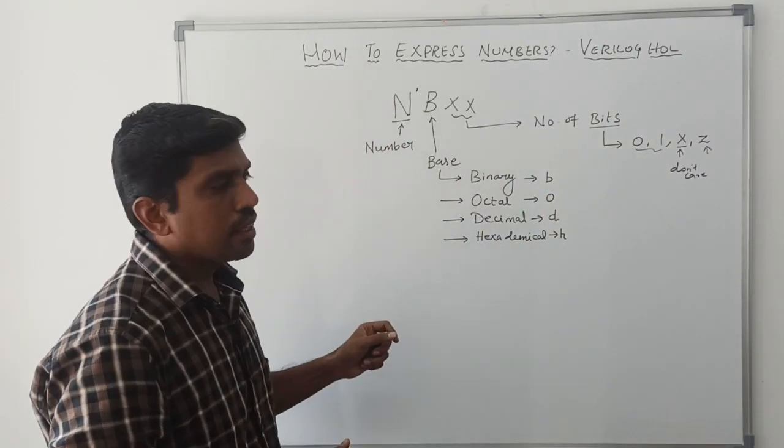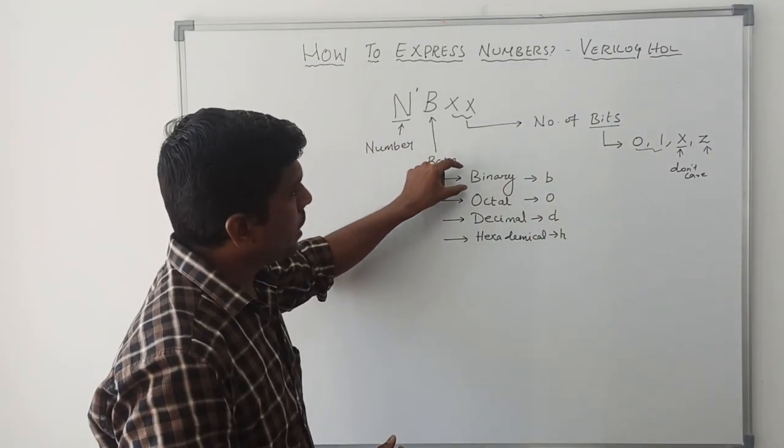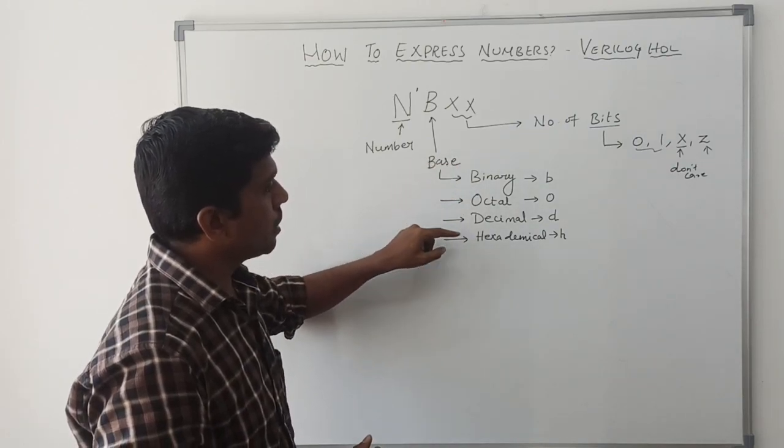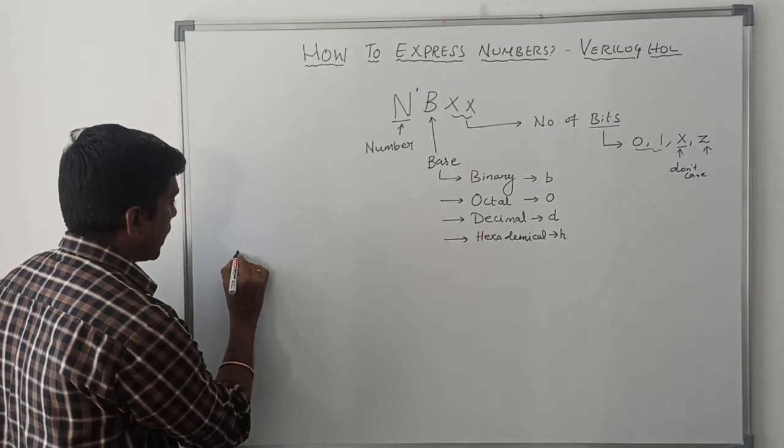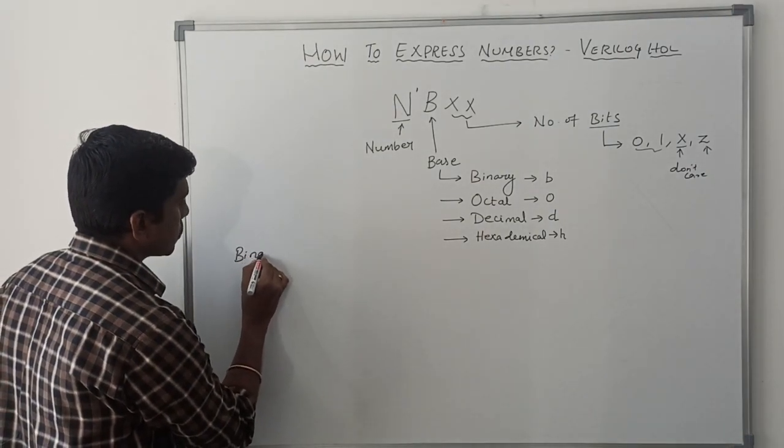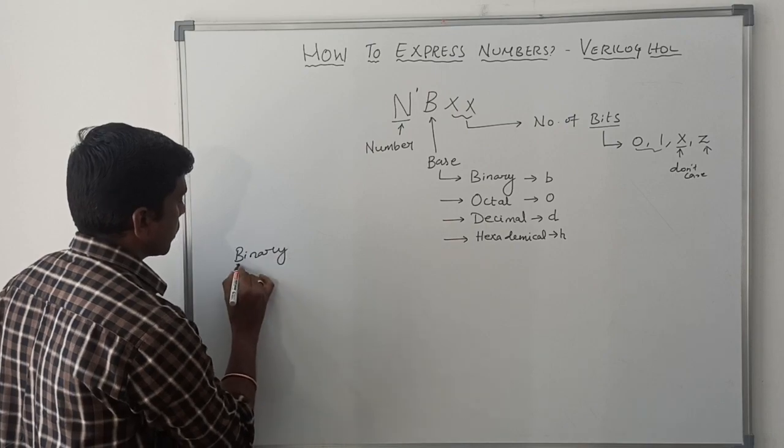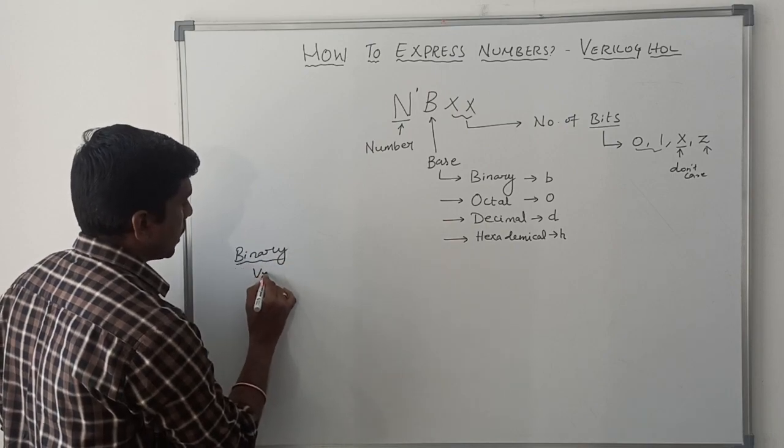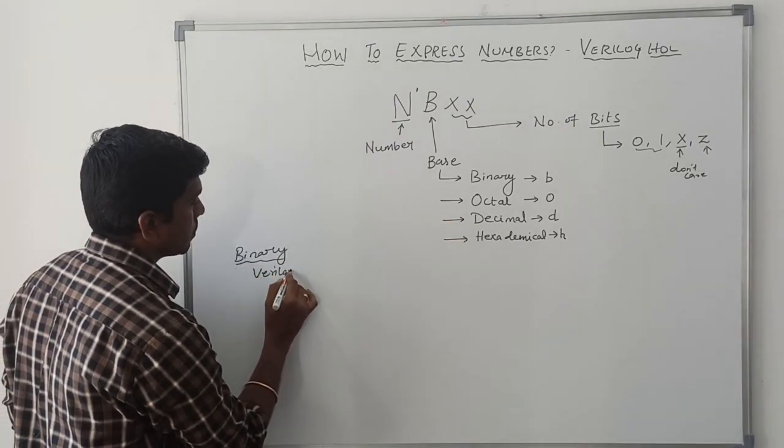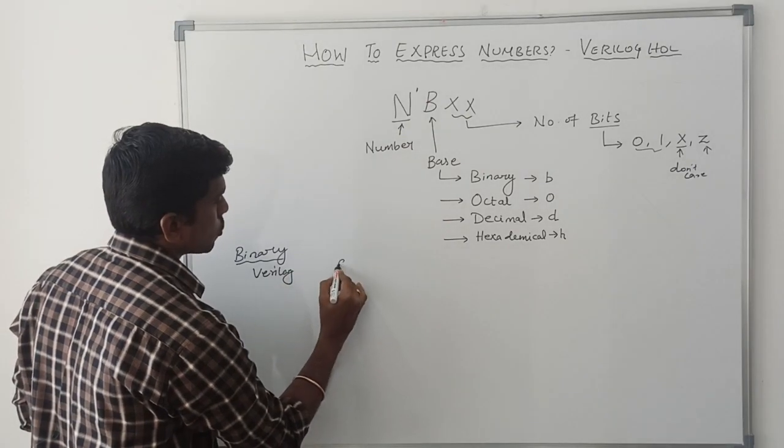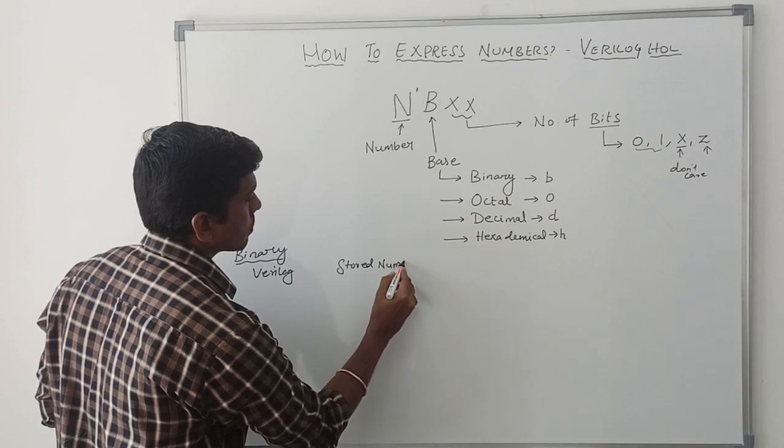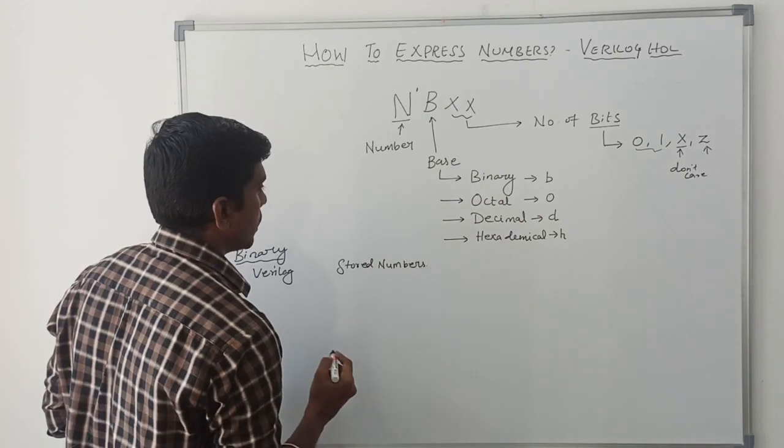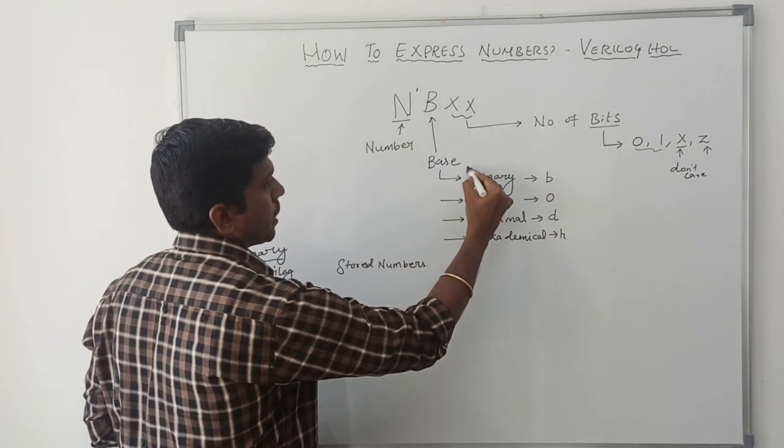Now, I will clearly explain how to represent the binary numbers in Verilog HDL, octal, decimal and hexadecimal. We will discuss one by one. Let me take binary. First one is binary. Verilog stores numbers.